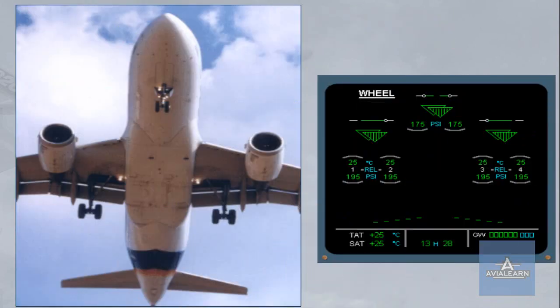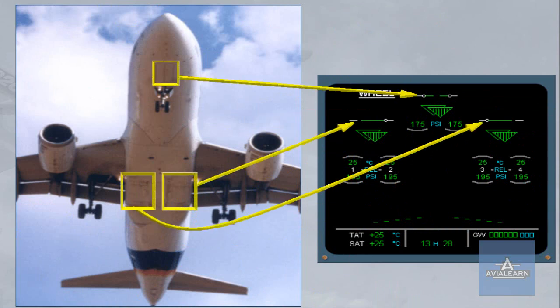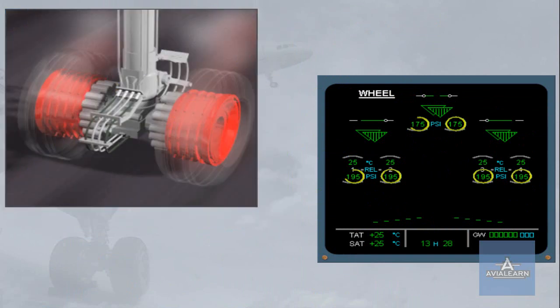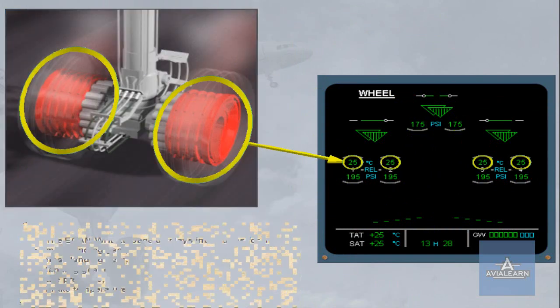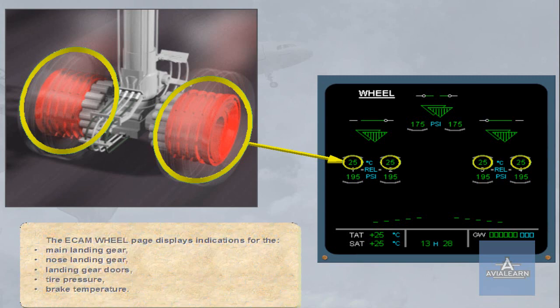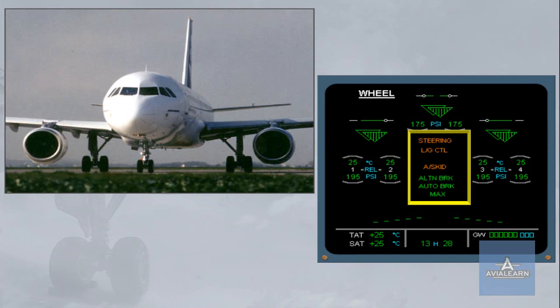The ECAM wheel page displays indications for the main landing gear, nose landing gear, landing gear doors, tyre pressure and brake temperature. In the centre of the ECAM wheel page, green and amber messages can be displayed to provide normal and abnormal indications.